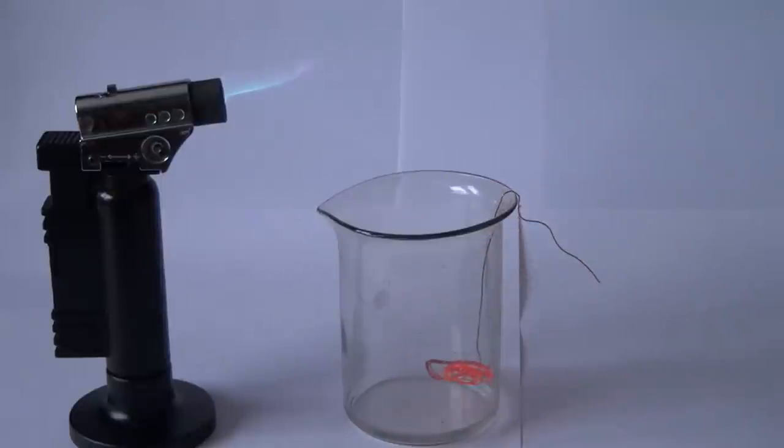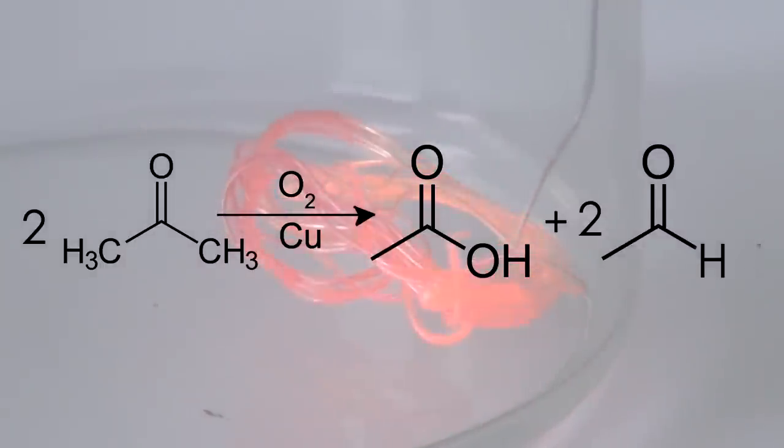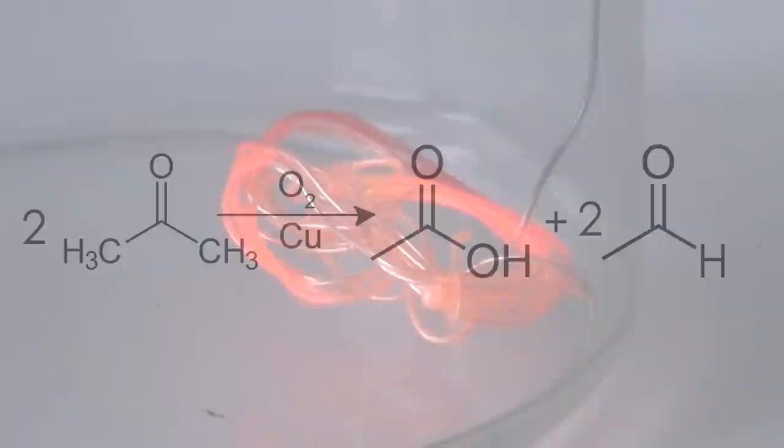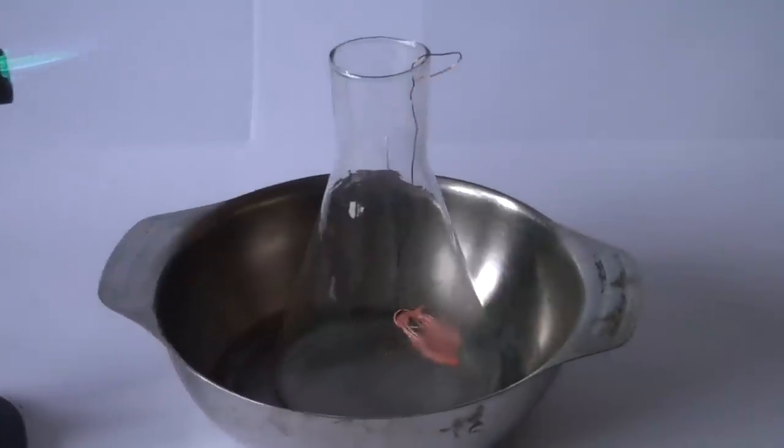Acetone vapors are oxidized to acetaldehyde and acetic acid at the surface of the wire. Acetone catalytic oxidation occurs. If you use a flask instead of the beaker, the wire will glow a little brighter.